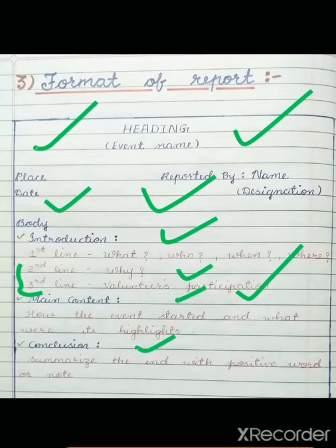Next comes the main content — that is, how the event happened, in what manner it happened, what was important in it. All such things are written in the main content: the headlines, highlights, and main details of the report.